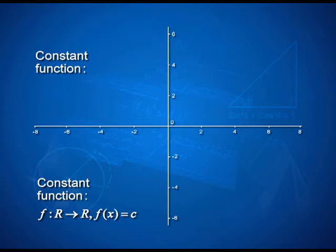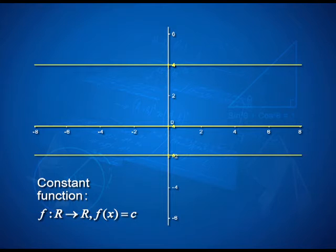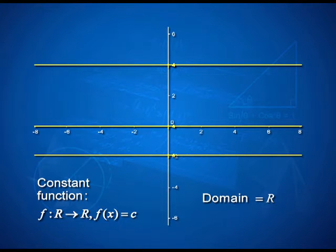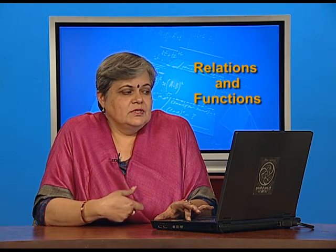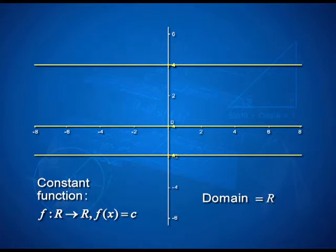Another interesting function is the constant function. Again mapped from real numbers to real numbers, f(x) = c, where c is a constant. So c can be negative 2, it can be 4, or c can even be 0. It turns out to be a straight line parallel to the x-axis. The domain is all real numbers — I can process all real numbers under this function. But the range — no matter what x is — will always be c, the constant. So the range is the single element set {c}.